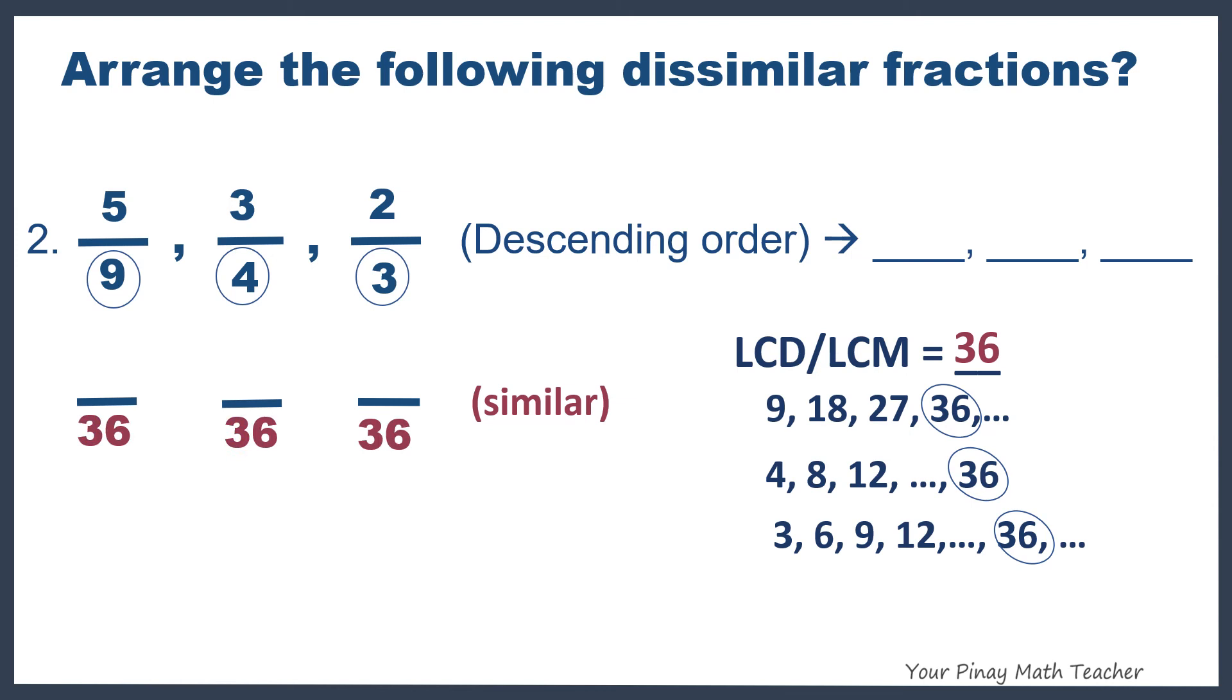This becomes our new common denominator. So look at the given fractions above. What will you multiply to 9 in 5 9ths? So we have 4. Do the same with 5. In 3 4ths, we have to multiply 4 by 9 to get 36. In 2 3rds, we have to multiply 3 by 12 to get 36. And so with 2, that must be multiplied by 12. So 5 times 4, we have 20 for the first fraction. And then 27, and then 24. Based on the similar fractions, our greatest fraction is 3 4ths, followed by 2 3rds, and then 5 9ths.